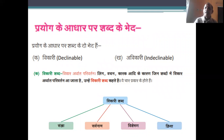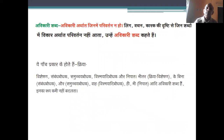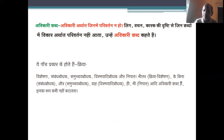विकारी शब्दों में संज्ञा, सर्वनाम, विशेषण, और क्रिया आते हैं। अविकारी शब्द वे होते हैं जिनमें कोई परिवर्तन नहीं होता। अविकारी भाषा अपना काम अपने अपरिवर्तित रूप में करती है। इसमें क्रिया विशेषण, संबंध बोधक, समुच्चय बोधक, और विस्मयादिबोधक आते हैं।